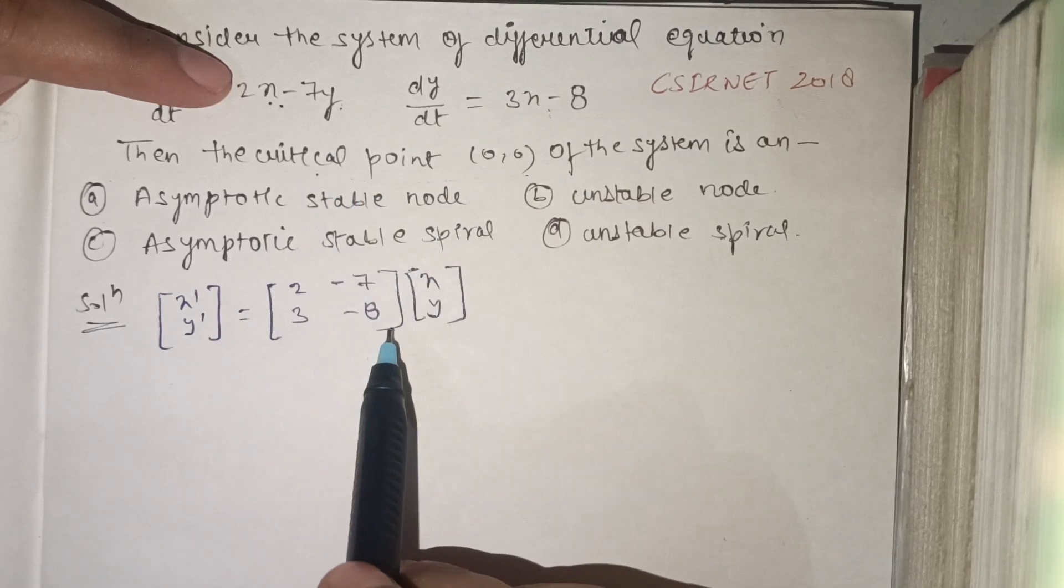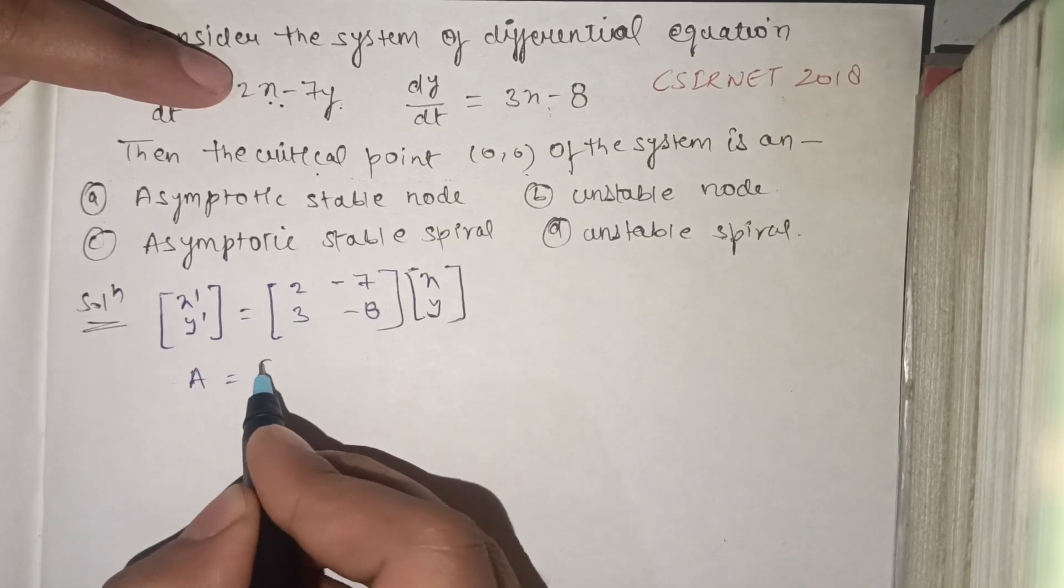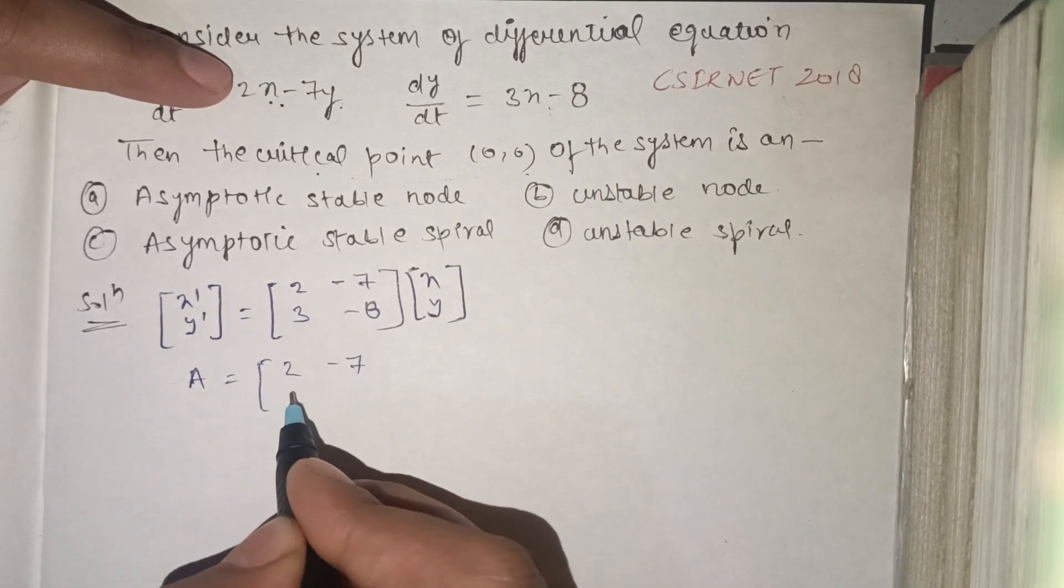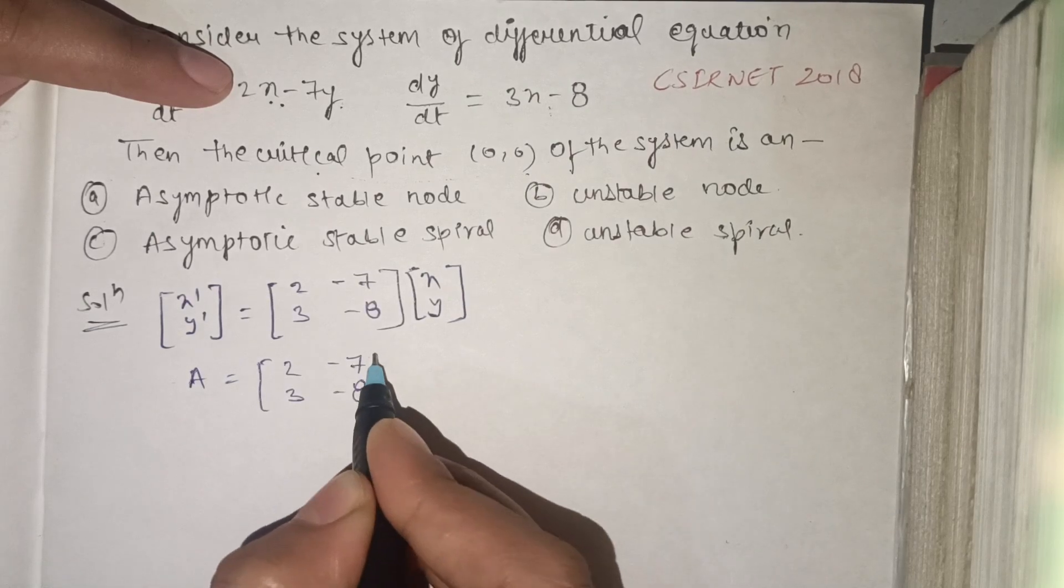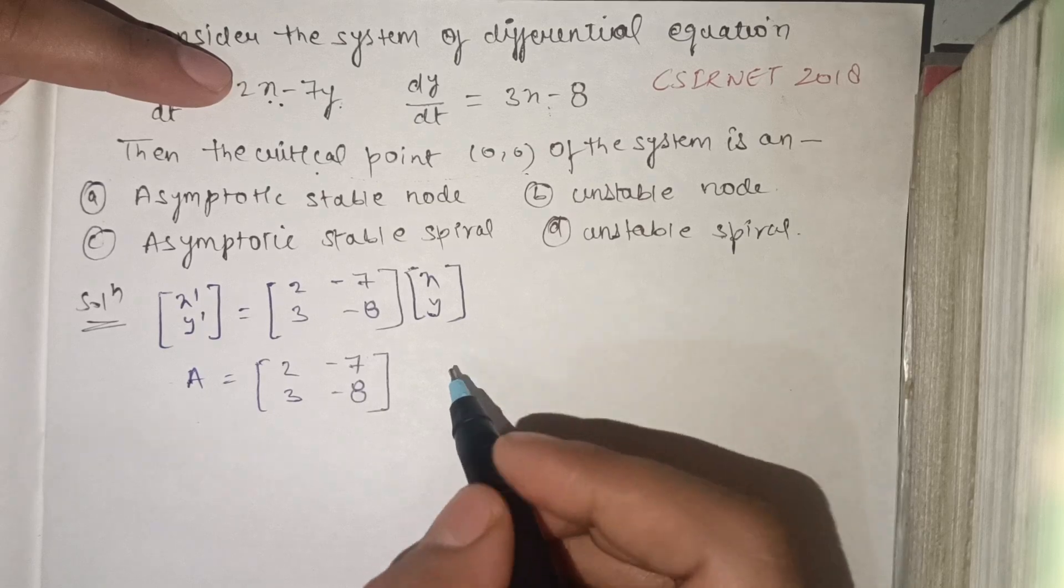Let A equals [2, -7; 3, -8]. So this is the matrix, let it be A. The eigenvalue is here. It is very easy to find the eigenvalue.